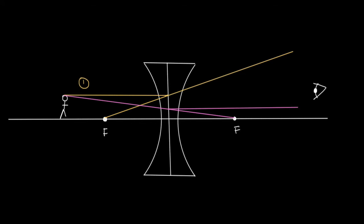And finally, ray number three. Ray number three comes from the top of the man, and it goes through the very centre of the lens, and then it keeps travelling in a straight line. So this is ray number three here.